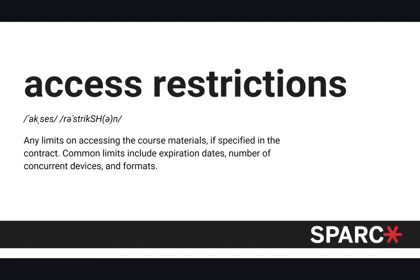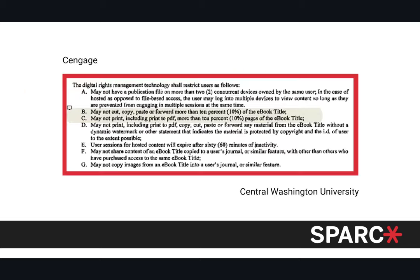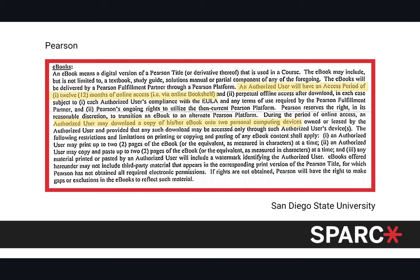These contracts also have access restrictions — limits on accessing the course materials. Examples include expiration dates on access, and limits on the number of devices. For instance, one contract states that a user session will expire after 60 minutes of inactivity, and users are not allowed more than two concurrent devices. Another contract gives only 12 months of access on up to two personal computing devices.